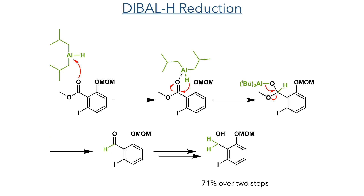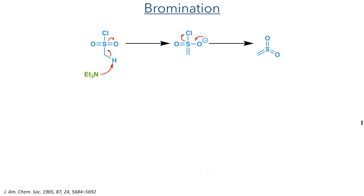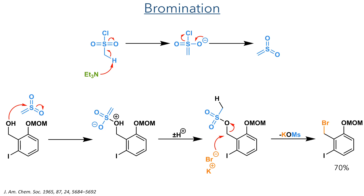This ester was then reduced using DIBAL. The aluminium first coordinates to the ester making it more electrophilic and allowing delivery of a hydride to form a tetrahedral intermediate. The tetrahedral intermediate eliminates methoxide to form an aldehyde, which then reacts with another equivalent of DIBAL to form a primary alcohol in a 71% yield over two steps. This alcohol was then converted to a bromide using mesyl chloride and potassium bromide. Mesyl chloride is first activated by triethylamine, attacked by the hydroxyl group, and the resulting mesylate is then displaced by bromide, forming the target compound in a 70% yield.